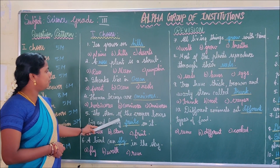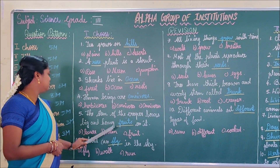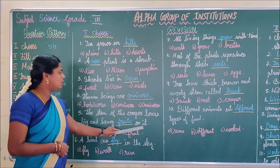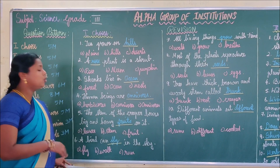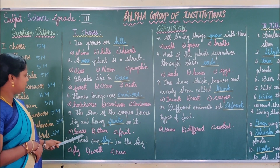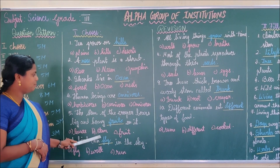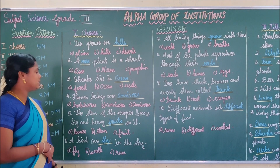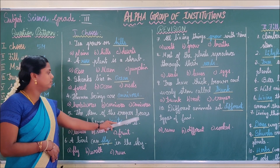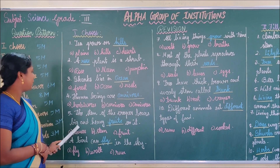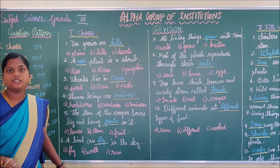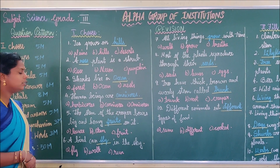Next question: The stem of the creeper bears blank on it. The stem of the creeper is big and heavy. The answer is fruits. The stem of the creeper bears big and heavy fruits on it — that's why it grows on the surface of the ground.